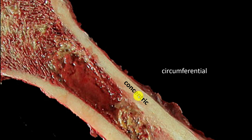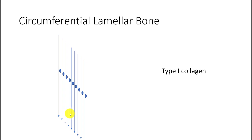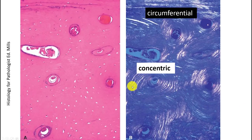At the endosteal and periosteal surfaces, bone is arranged as circumferential lamellae running parallel to one another. All of this organization — whether concentric or circumferential — is organized by type 1 collagen, which is the strong collagen and accounts for much of bone's strength. Under polarized light you can beautifully see the concentric arrangement of osteons and the parallel circumferential arrangement at the periosteal surface.